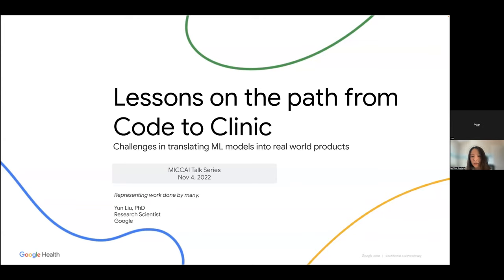Dr. Yun Liu is a staff research scientist in Google Health. In this role, he focuses on developing and validating machine learning for medical imaging across multiple fields, including pathology, ophthalmology, radiology, and dermatology. Yun Liu completed his PhD at Harvard MIT Health Sciences and Technology, and he worked on predictive risk modeling using biomedical signals, medical texts, and billing codes. He has previously also worked on predictive modeling for nucleic acid sequences and protein structures.